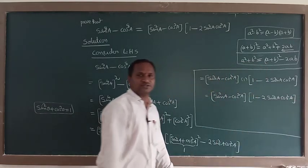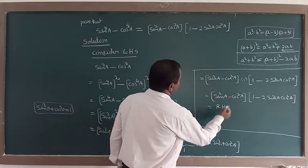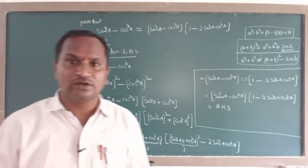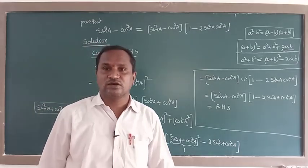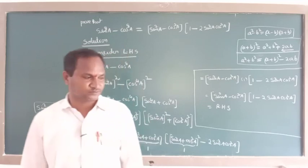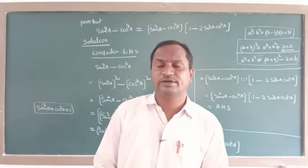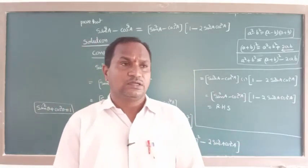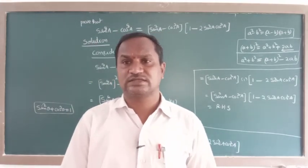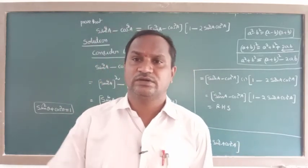Therefore the final answer is: sin⁸A minus cos⁸A equals sin squared A minus cos squared A, into 1 minus 2 sin squared A into cos squared A. We got the right-hand side. Today we finished some different types of problems on trigonometric functions. You must know all types of formulas from trigonometric functions. Next class also we will solve some different types of trigonometric problems. Thank you very much.